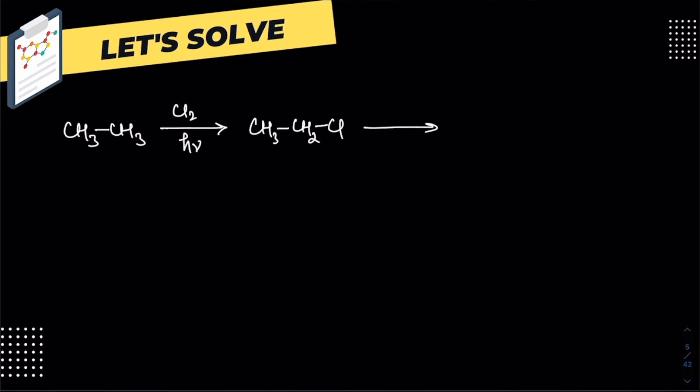Now you can convert it into a hydroxy group - an alcohol - by treating with aqueous KOH. Through an SN2 reaction, this will give you CH3CH2OH.